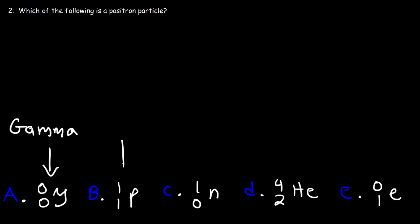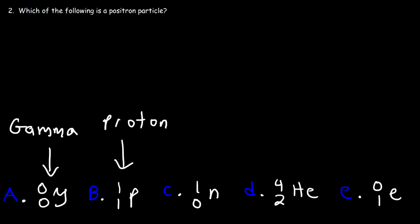Answer choice B uses the symbol P — you might think it stands for positron, but this is actually a proton. A proton has a mass of one and a charge of plus one. Answer choice C represents the neutron. Like the proton, the neutron has a mass of one, but a charge of zero because it's neutral.